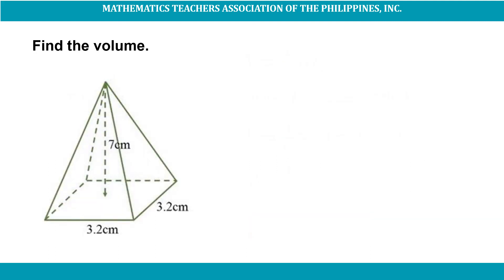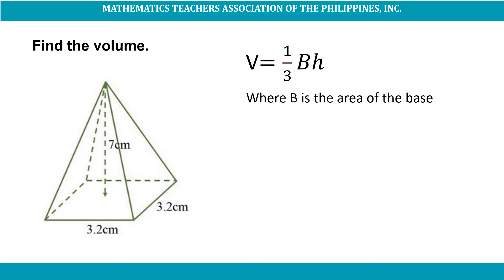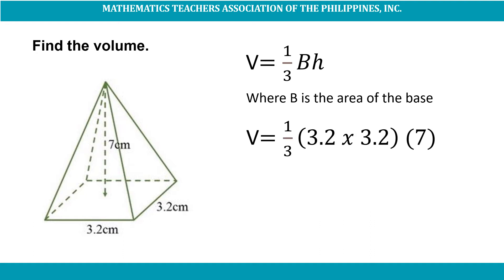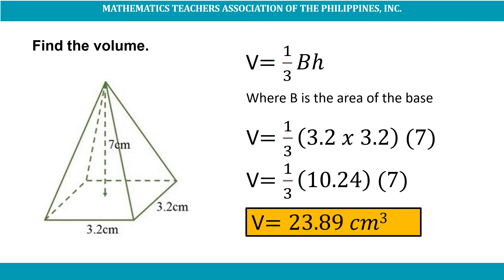Let's solve for the volume of another pyramid, given its height of 7 centimeters, its base which is 3.2 centimeters long and 3.2 centimeters wide. The formula in finding the volume of a pyramid is V = (1/3)Bh, where B is the area of the base. Substituting: V = (1/3) × (3.2 × 3.2) × 7 = (1/3) × 10.24 × 7. The volume of this pyramid is 23.89 cubic centimeters.